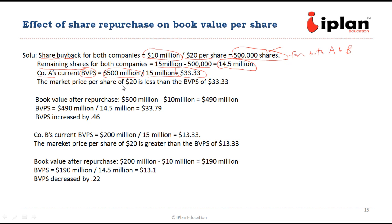If we notice, the book value of $33.33 is greater than the market price of $20, which says the company is underpriced. Now let us look at the book value after repurchase. $500,000,000 minus $10,000,000 — the cash used to buy back shares — gives a new book value of $490,000,000. Divided by 14.5 million new shares, the book value per share will be $33.79. So the book value has increased by $0.46.